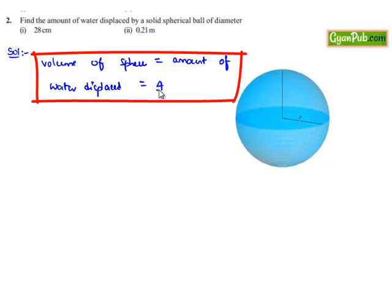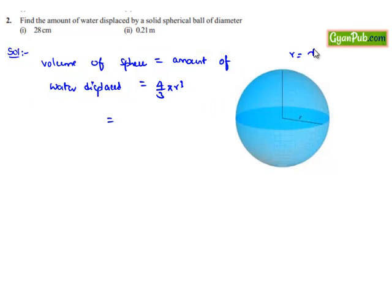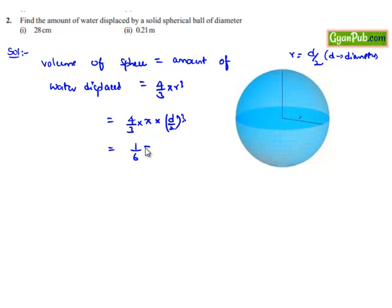The volume of the sphere equals 4/3 × π × r³. By converting this into diameter, radius equals diameter/2. Let d be the diameter. Substituting into the formula: 4/3 × π × (d/2)³, which simplifies to (1/6) × π × d³. Therefore the volume of sphere in terms of diameter is (1/6) × π × d³.